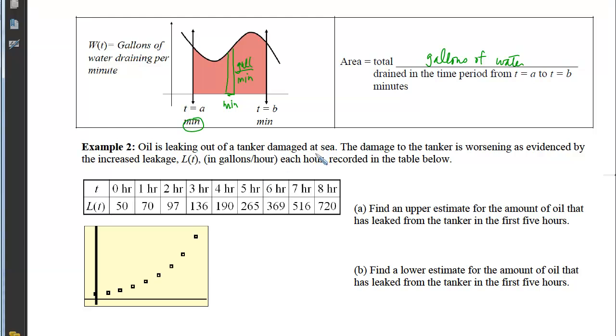So now let's apply that to this second example. We have oil leaking out of a tanker that has been damaged at sea. The damage to the tanker is worsening as evidenced by the increased leakage measured in gallons per hour each hour recorded in the table below. Here you can see I've taken that data and graphed it so that we can have a picture of what that L(t) looks like. And the question is, we want to find an upper estimate for the amount of oil that is leaked from the tanker in the first five hours. So the first five hours will take us first, second, third, fourth, fifth hour.